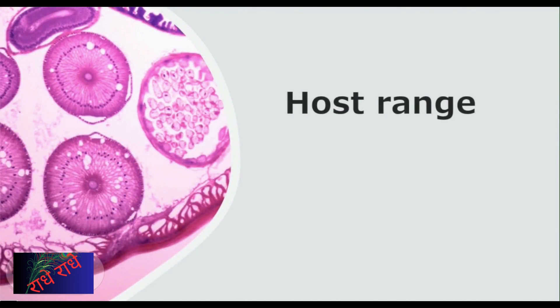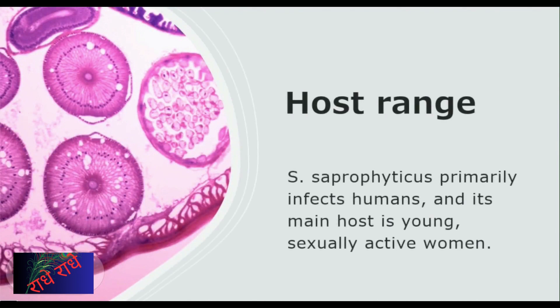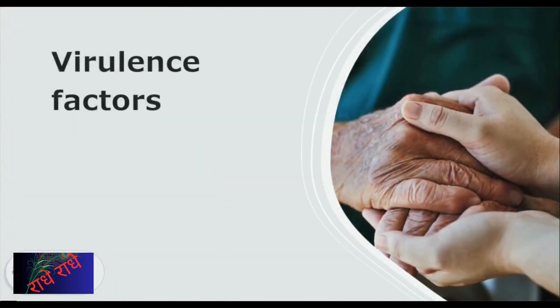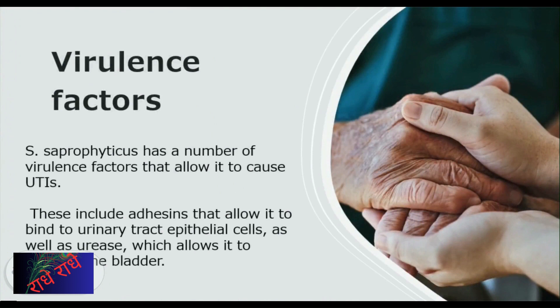Staphylococcus saprophyticus is a bacteria strain that primarily affects young, sexually active women. As seen in this close-up of purple cells, these strains possess the ability to cause infections in the urinary tract. S. saprophyticus is a bacterium commonly found in humans that is a frequent cause of urinary tract infections. For it to cause UTIs, it must employ virulence factors such as adhesins, which permit it to attach to cells in the urinary tract, and urease, which allows it to colonize the urinary bladder.